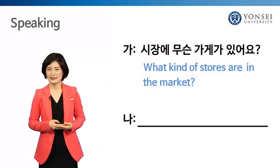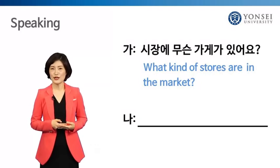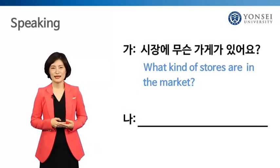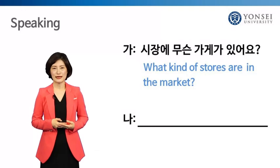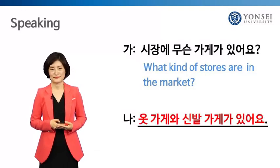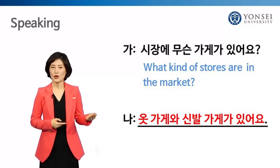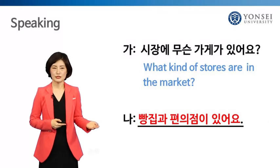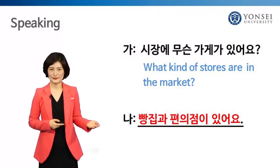Excellent. Can you answer my question? 시장에 무슨 가게가 있어요? Your answer could be, 옷가게와 신발 가게가 있어요. Or, 빵집과 편의점이 있어요.